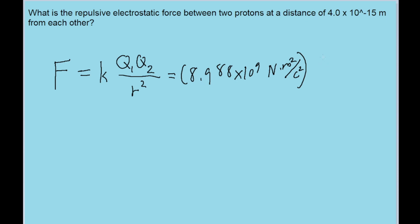For the charges, the problem doesn't explicitly say the charge, but it says we're dealing with protons, and the charge of a proton is always about 1.602 times 10 to the power of negative 19 Coulombs. Since it's two of them, I'm just going to square this instead of writing the charge out again side by side.